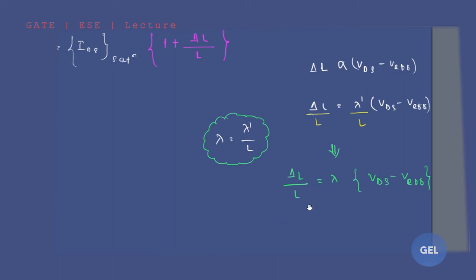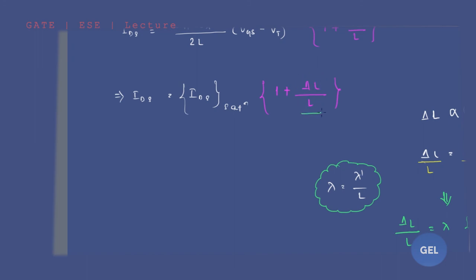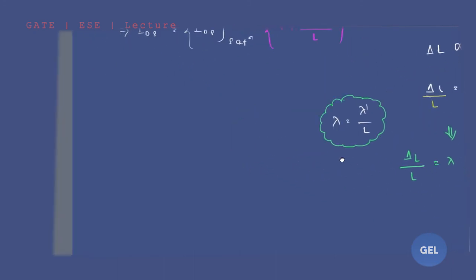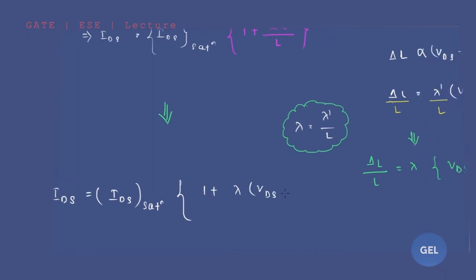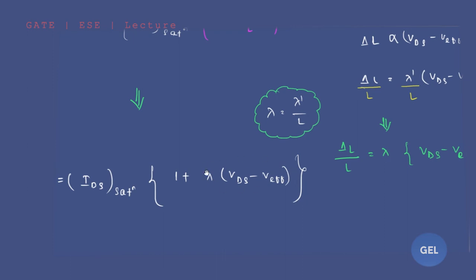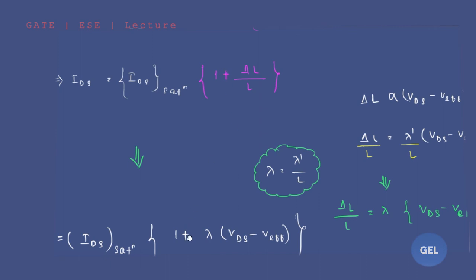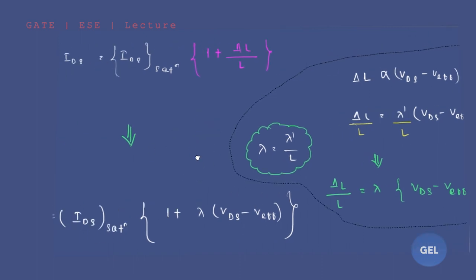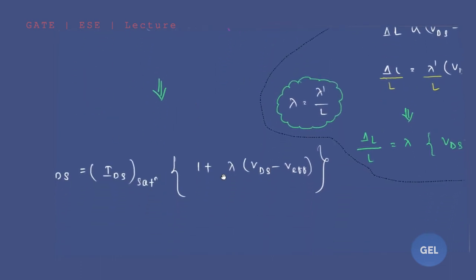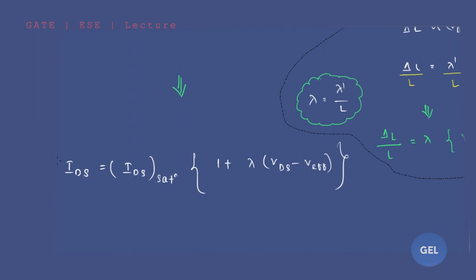Now substituting this value of ΔL/L back into the IDS expression, we replace (1 + ΔL/L) with (1 + λ(VDS − V_effective)). All slides will be provided in the description, so you don't need to copy everything down.